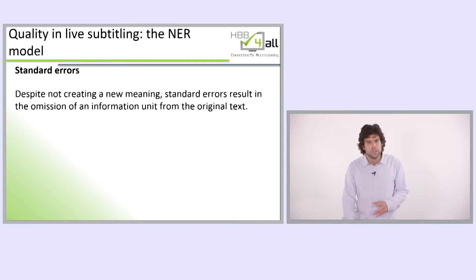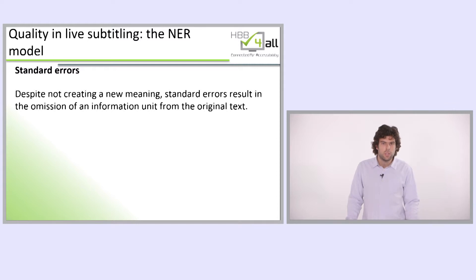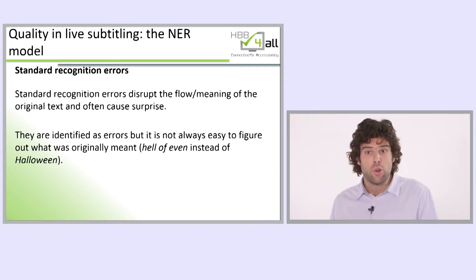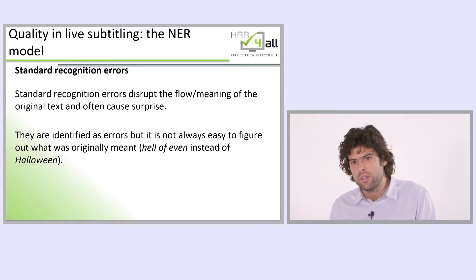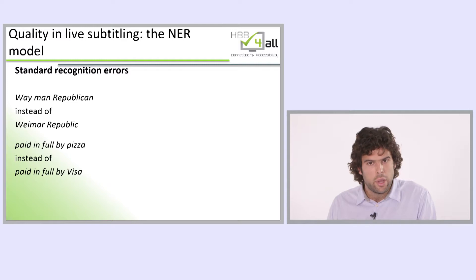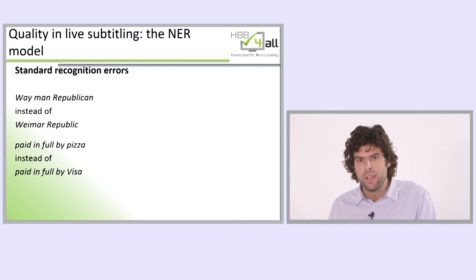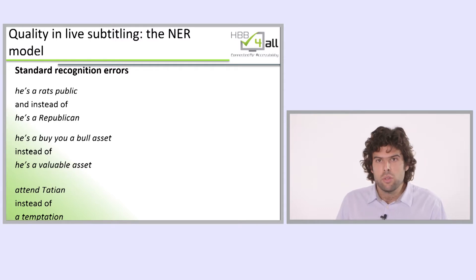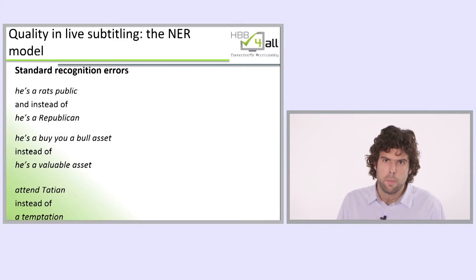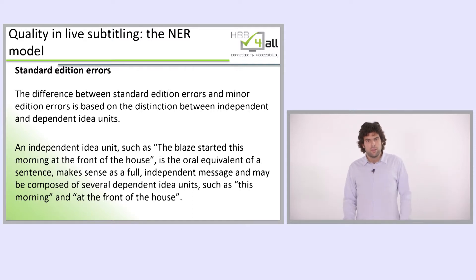Standard errors, despite not creating a new meaning, result in the omission of an important unit from the original text. Standard recognition errors disrupt the flow and meaning of the original text, and often cause surprise. They are identified as errors, but it is not always easy to figure out what was originally meant. Examples include: 'Hell of Even' instead of 'Halloween'; 'Weyman Republican' instead of 'Weyman Republic'; 'paid in full by Pizza' instead of 'paid in full by Visa'; 'he's a rat's public' instead of 'he's a Republican'; 'he's a buy you a bull asset' instead of 'he's a valuable asset'. The distinction between standard and minor edition errors is based on independent versus dependent idea units.